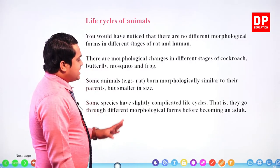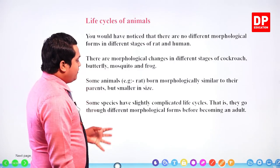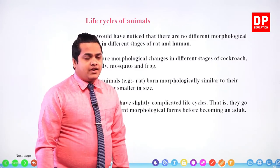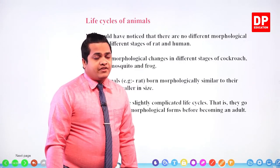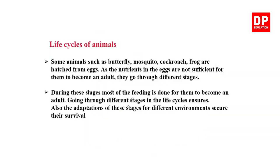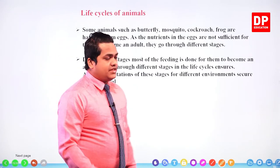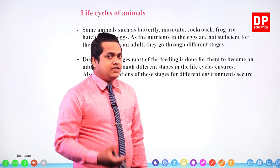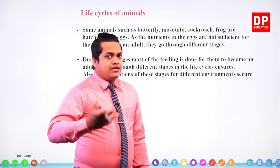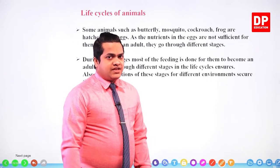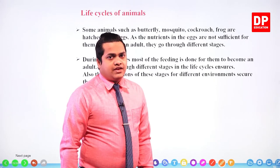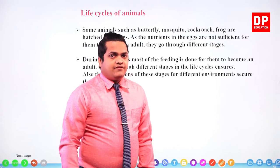Some species have slightly complicated life cycles — they go through different morphological forms before becoming an adult. Some animals such as butterfly, mosquito, cockroach, and frog are hatched from eggs. As the nutrients in the eggs are not sufficient for them to become an adult, they go through different stages. These organisms hatch out from the egg and go through different stages of life with different morphological features in each stage, and finally become an adult.